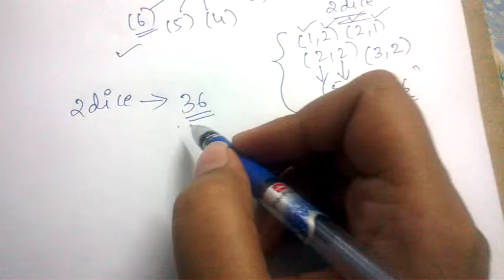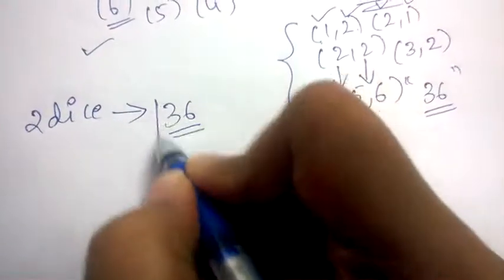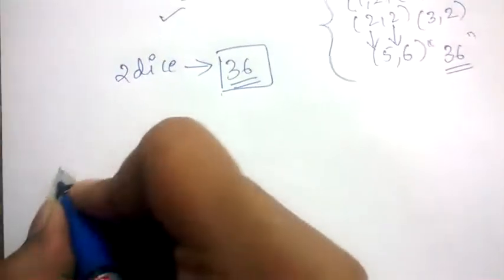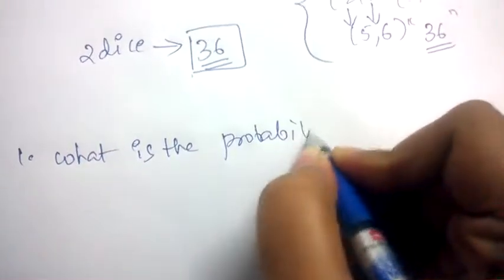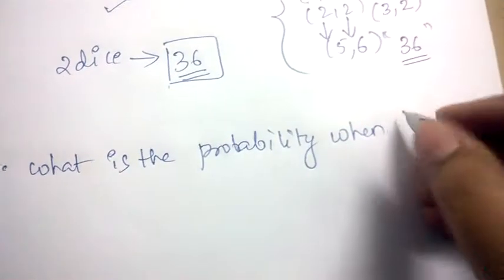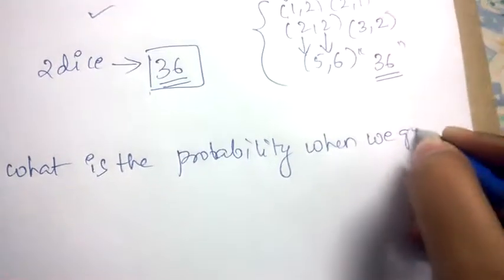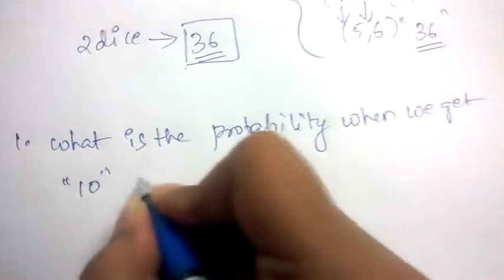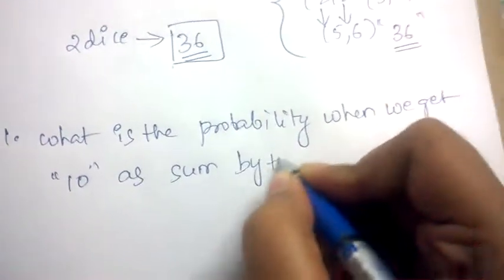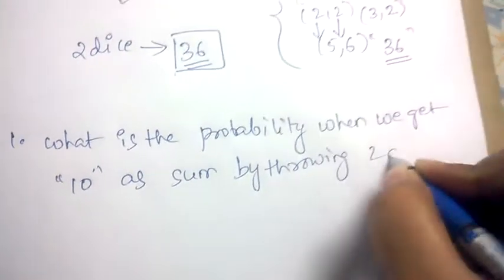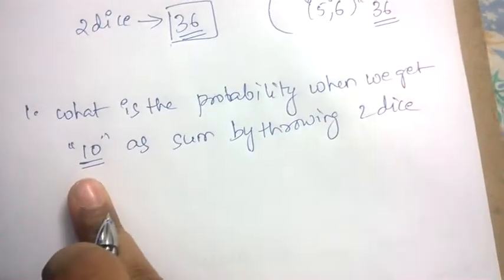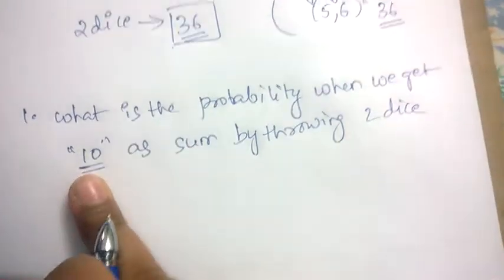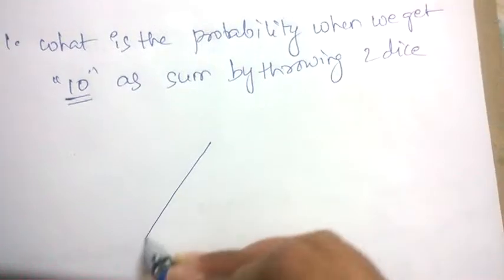Now we will see the shortcut to solve dice problems. The question will be: what is the probability of getting a sum of 10 when throwing two dice? Let this be our example equation.